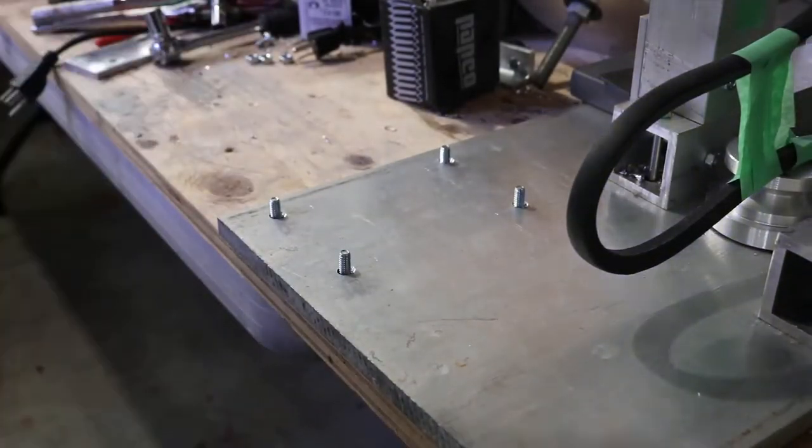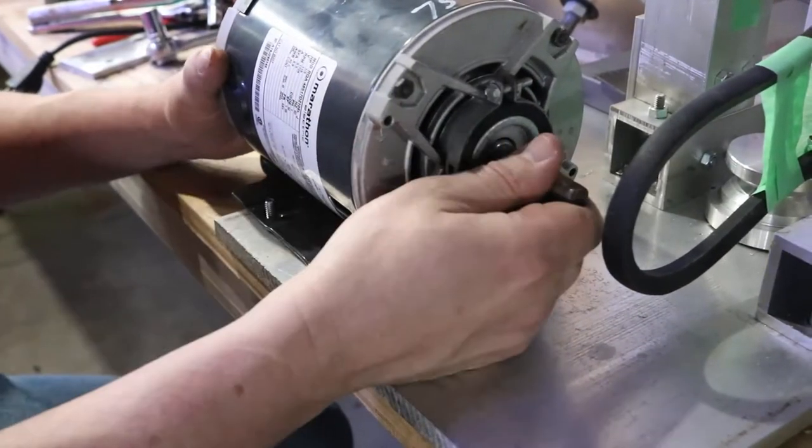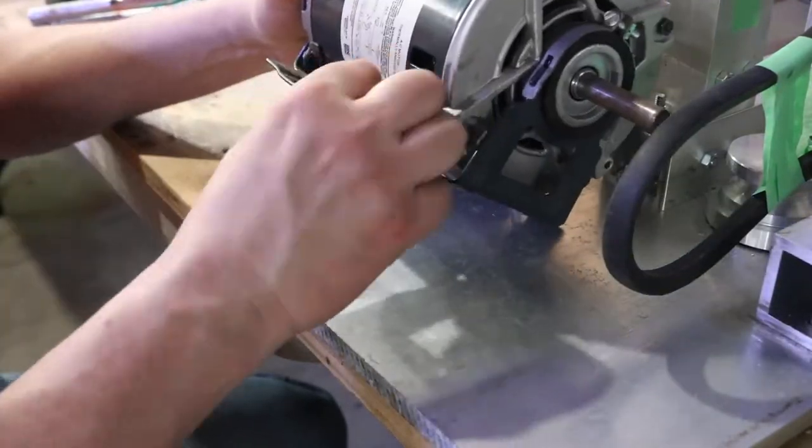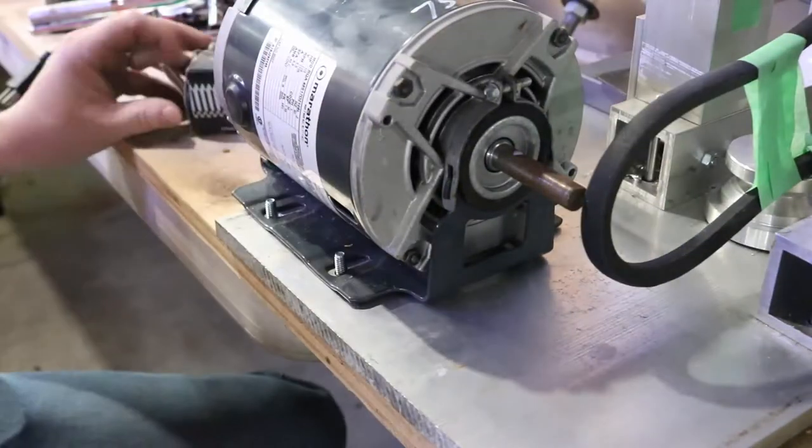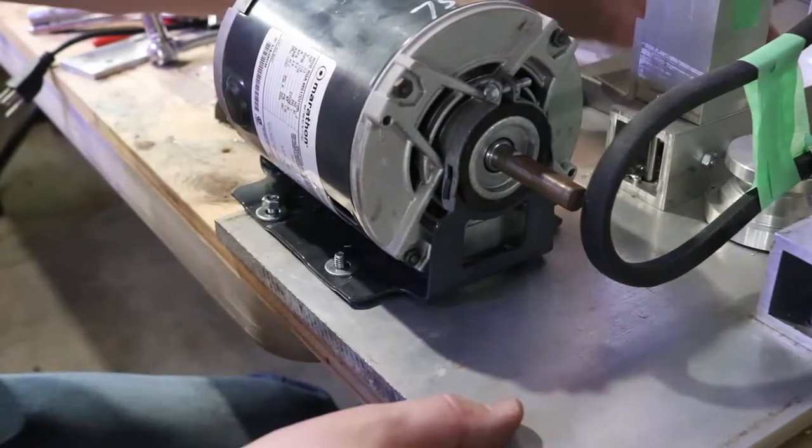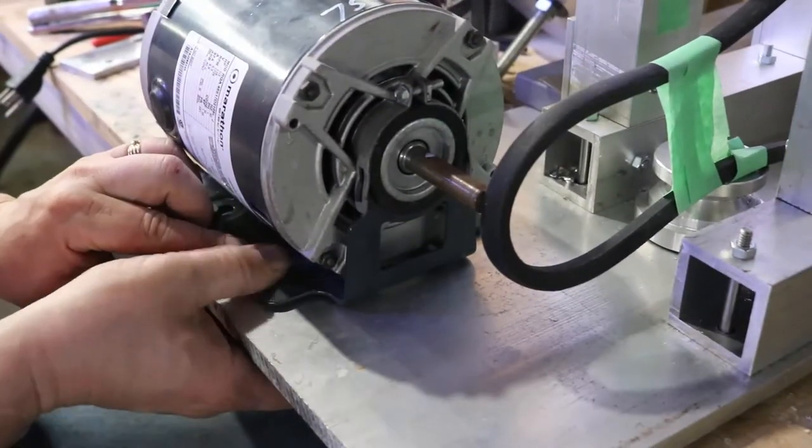So what I did is just mark the holes and drilled them. There's no need to be too precise with this because as you can see the holes in the motor are pretty sloppy. All I wanted to do is make sure that when I square this up I have a bit of play just in case I need to make some adjustments for making sure the belt is running straight.